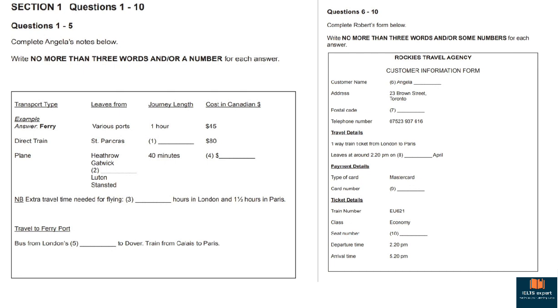Section 1. You will hear a conversation between a man and a woman discussing the travel arrangements regarding a trip from London to Paris. First, you have some time to look at questions 1 to 5. You will see that there is an example. This time only the conversation relating to this will be played first. So ferry is the correct answer. Now we begin. You should answer the questions as you listen, as the recording is not played twice. Listen carefully to the conversation and answer questions 1 to 5.